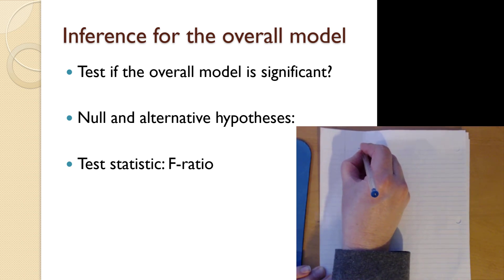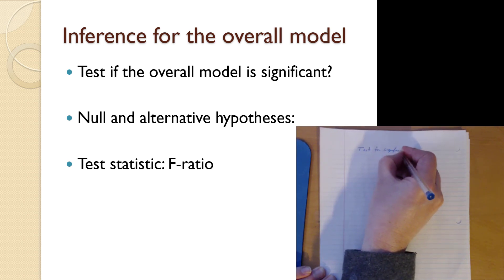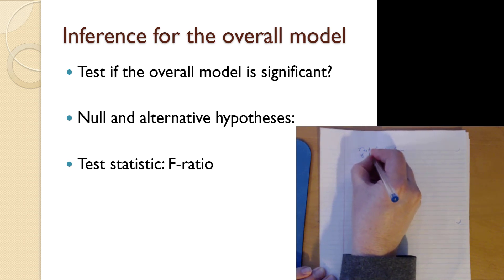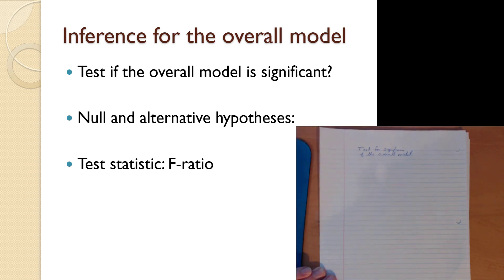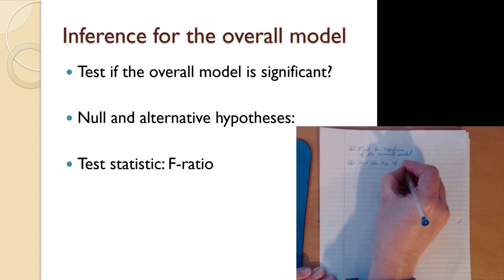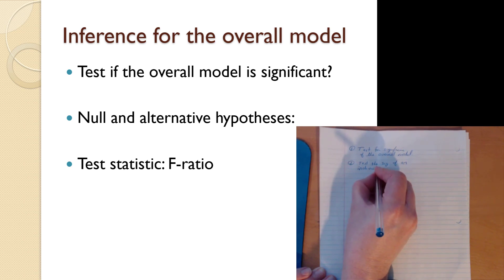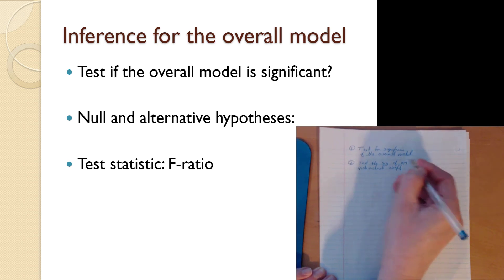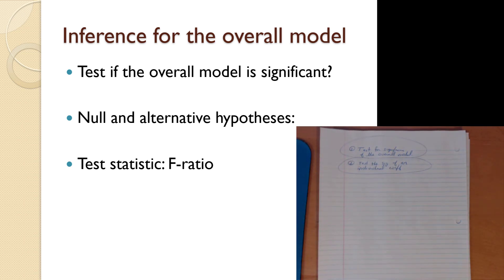We can do a test for the significance of the overall model — that's the whole model, all the coefficients, intercept plus all the slopes. And the second thing is we can test the significance of an individual coefficient. So in one case we test for all of them together, and in the second case we test for one specific one.